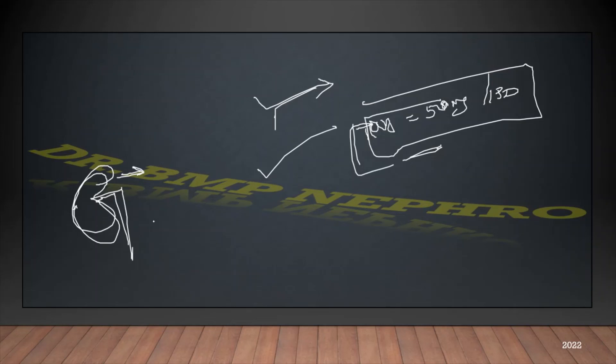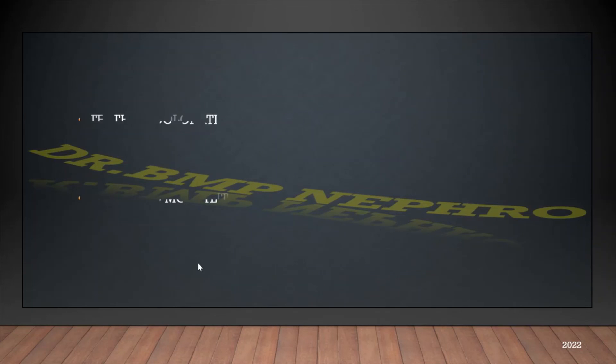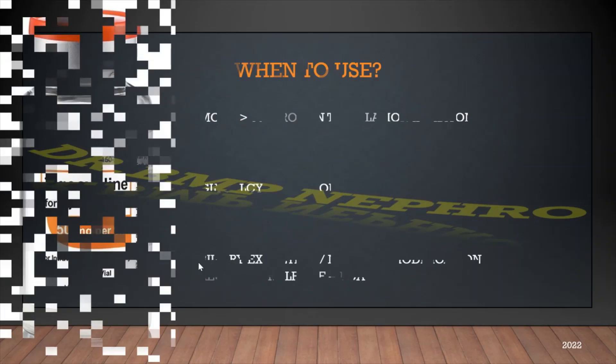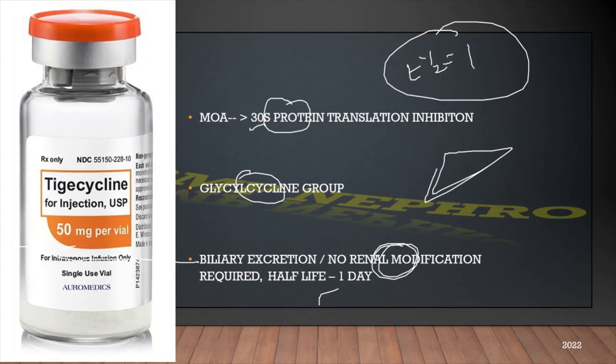The renal penetration is very poor. These are the important points with respect to tigecycline, which comes in 50mg vials.